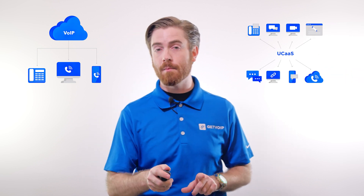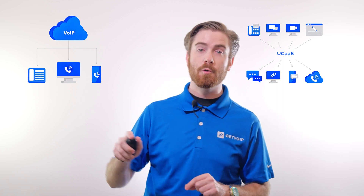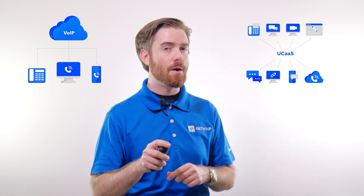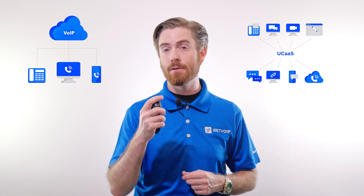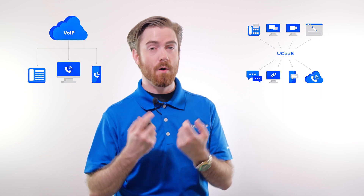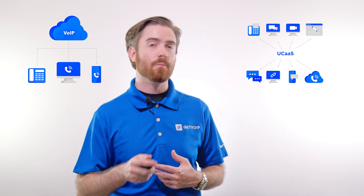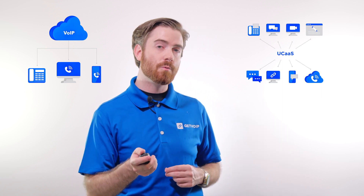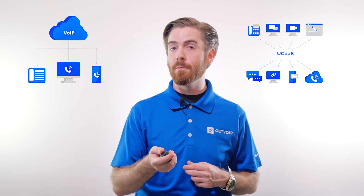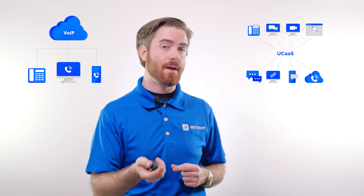The main difference between UCaaS vs VoIP is that VoIP provides one communication channel — voice calling, and occasionally SMS — while UCaaS streamlines multiple communication channels, including but not limited to VoIP calling, all into one dashboard. VoIP provides a business phone system with additional phone numbers or calling features available as paid add-ons.